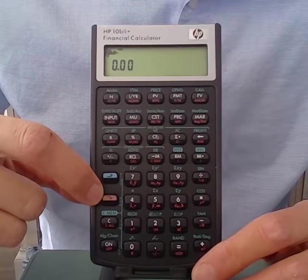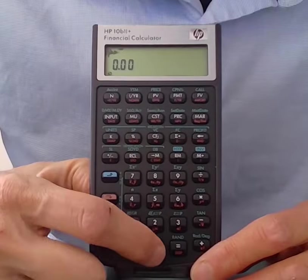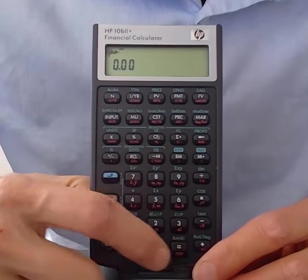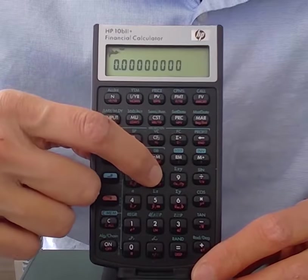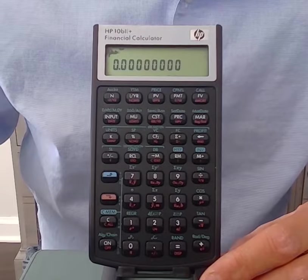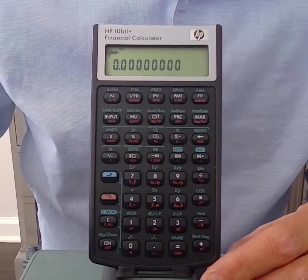To do that, you're going to press this reddish-orange shift button and then the equal sign which says DISP underneath it. And then I'm going to press the number of digits I want to see. So I want to see eight, that's the maximum, and so now I'll be able to see all the digits up to the eighth place.